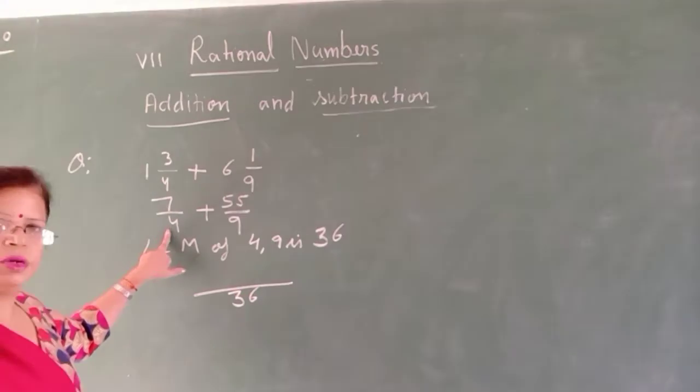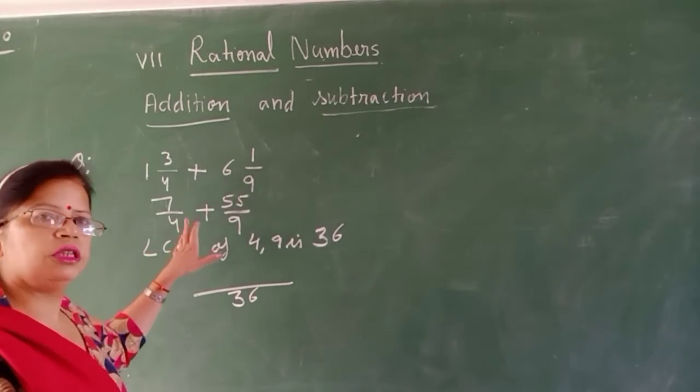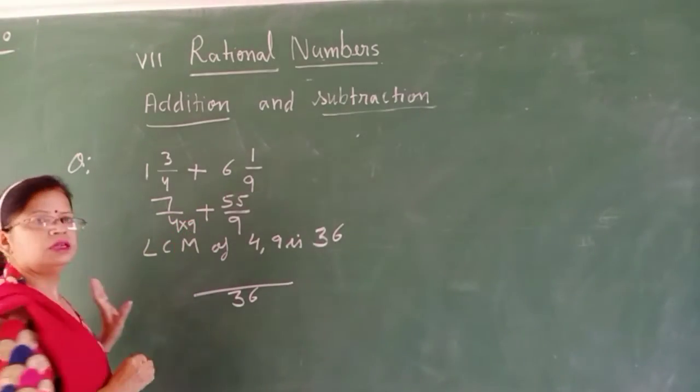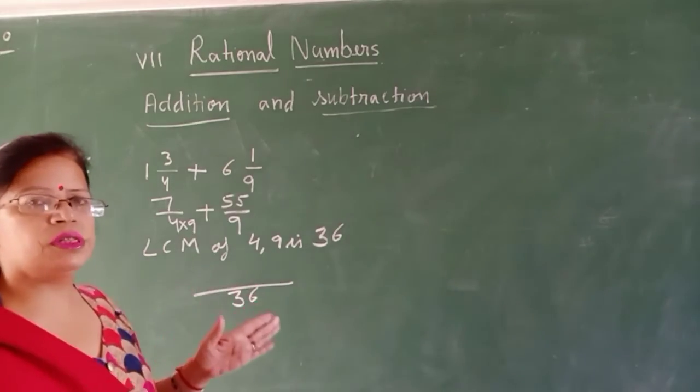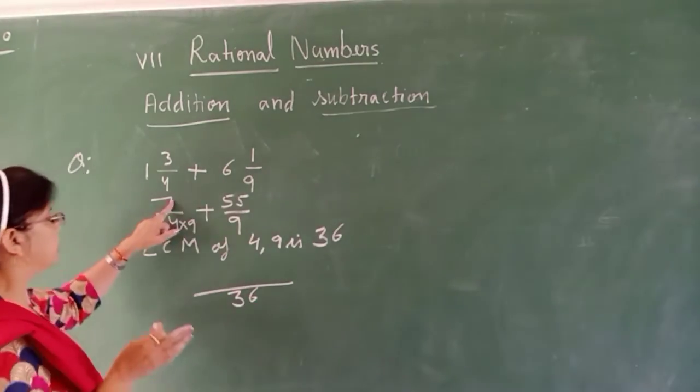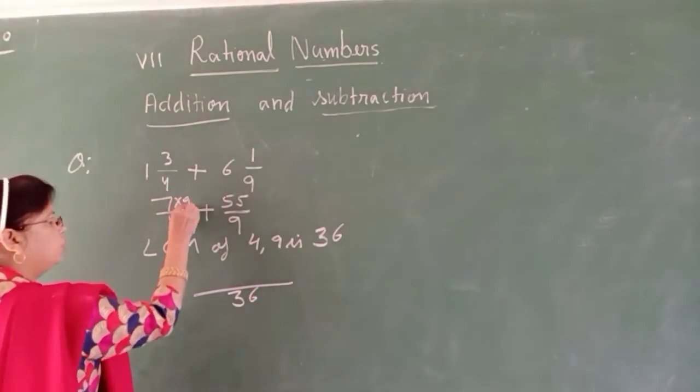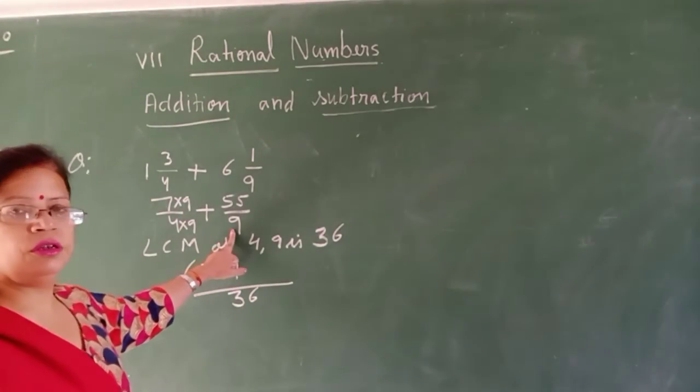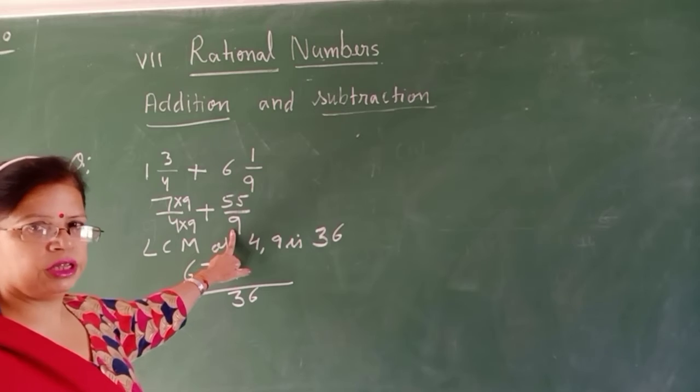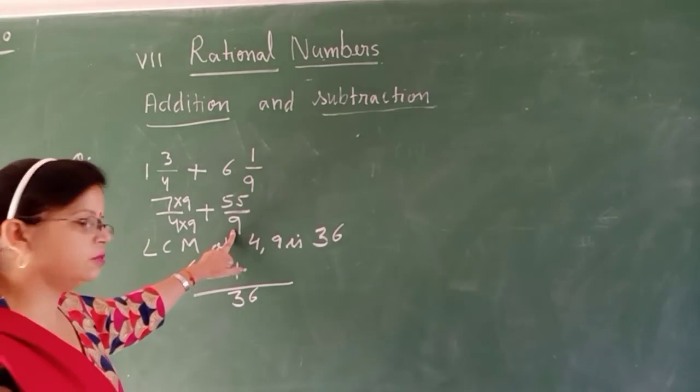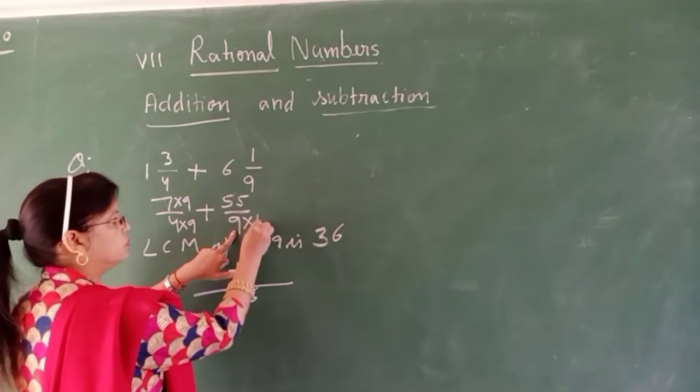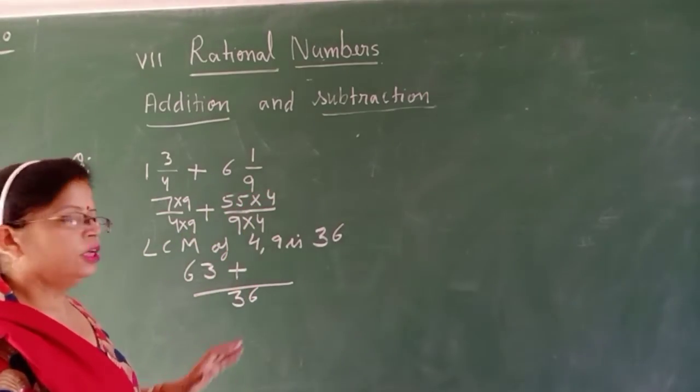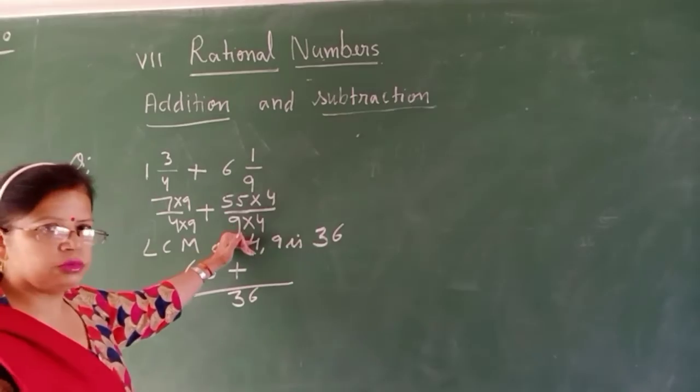4 multiplied by which number will give you 36? By which number will you multiply? 9. Same number you will multiply with 7, so 63. 9 multiplied by which number gives 36? 4. So same number you multiply with the numerator. Now you have like terms.